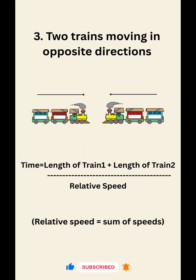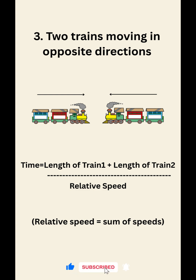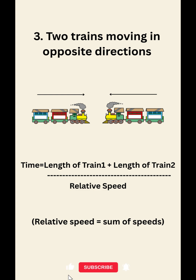Two trains in opposite directions. When two trains move in opposite directions, speed adds up. So the formula is: time equals length 1 plus length 2, divided by speed 1 plus speed 2.